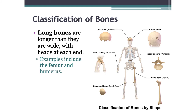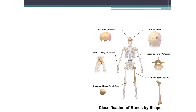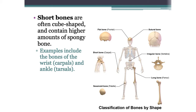Long bones are longer than they are wide with heads at each end. The femur and humerus are simple examples of long bones. Short bones are often cube-shaped and contain higher amounts of spongy bone. These are going to be the bones of the wrist and the ankle — the carpals and the tarsals.